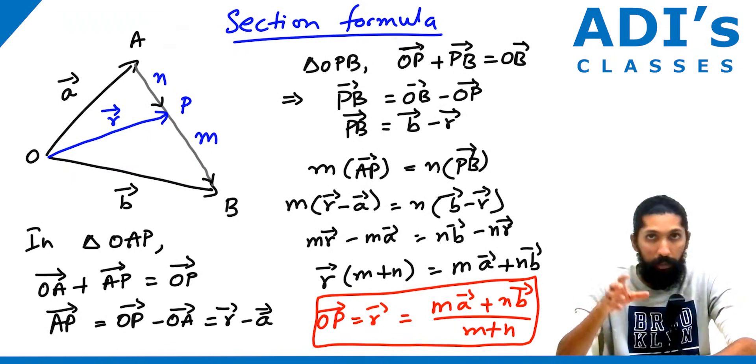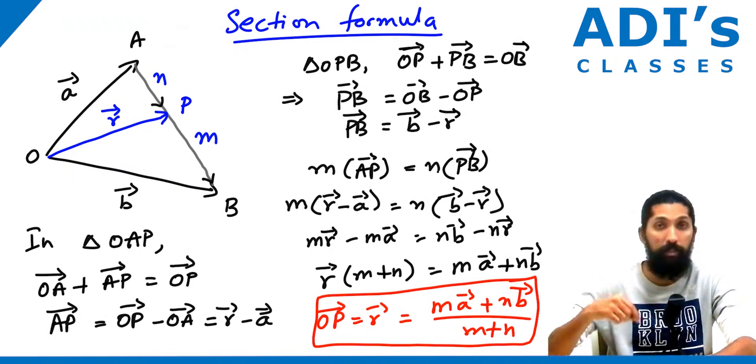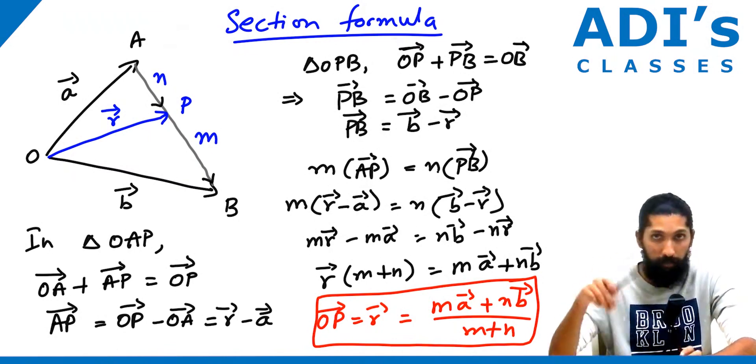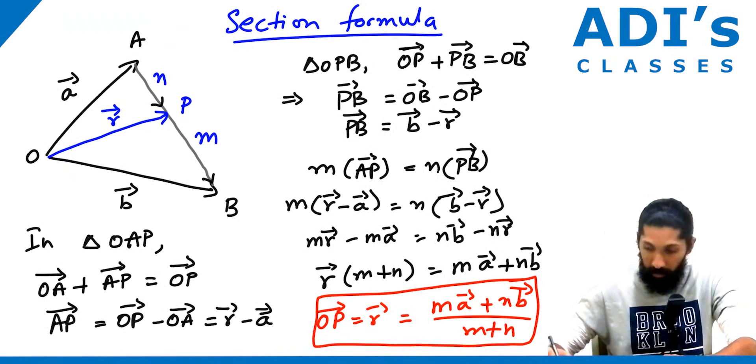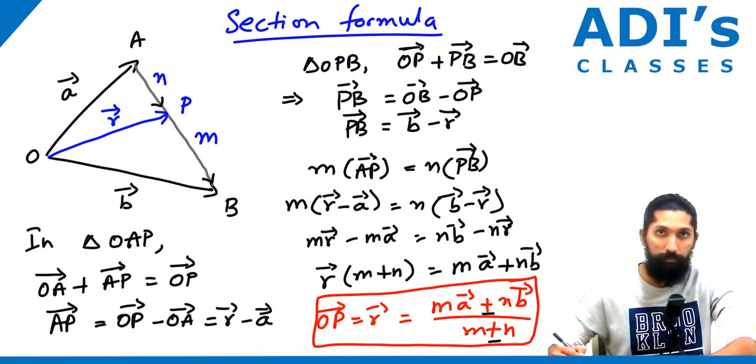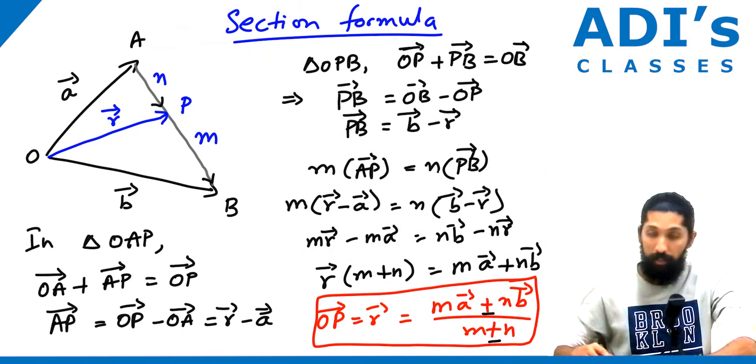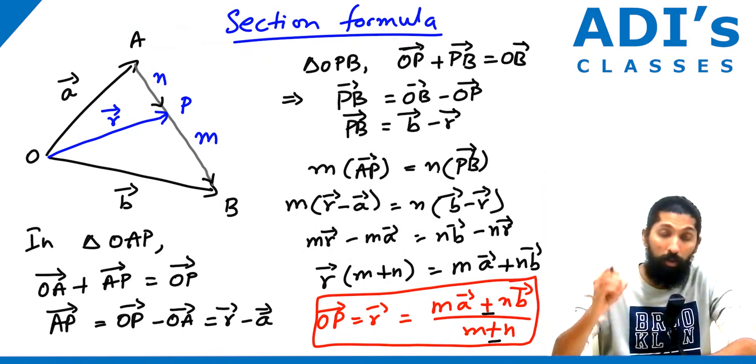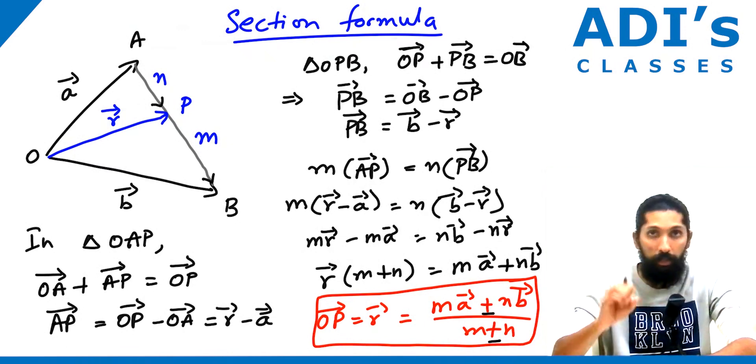With this section formula, remember this is for internal division. If you have external division, then instead of plus, you get minus. That's the only difference. This is what we call the section formula in vectors.